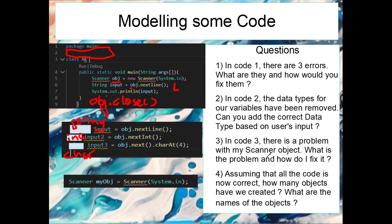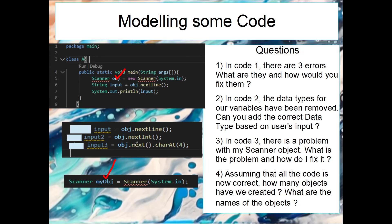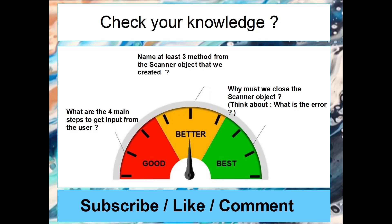In code 3 there is a problem with the Scanner object — what is the problem? We're actually missing something: like all objects when you create one you have the data type, which is Scanner, then the object's name, and then you need the new keyword. So we need to say new Scanner and then that would work. Assuming all the code is now correct, how many objects have we created? We would have created one object here and another one here, so we've created two objects total.